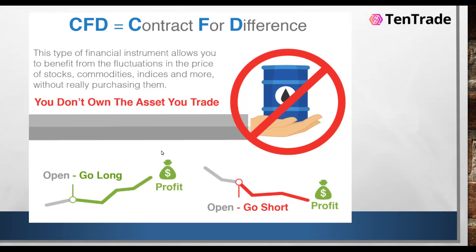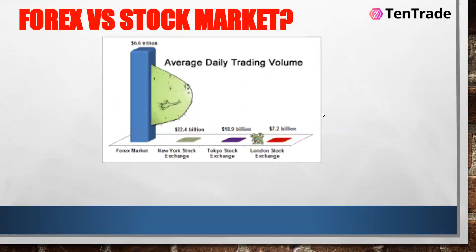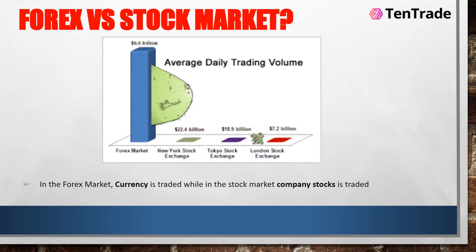Everything is made possible because of Contracts for Difference. Let's do a comparison among different financial markets. In the forex market, currencies are traded, while in the stock market, company stocks are traded. What we trade in the forex market are currencies of different countries — like the naira, the dollar, the pound sterling. In the stock market what is traded are company stocks like Apple, Facebook, and Tesla.